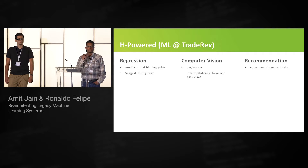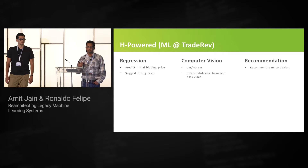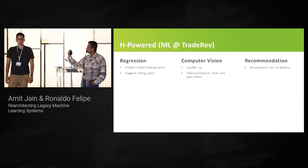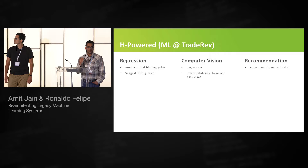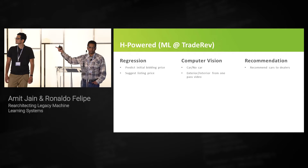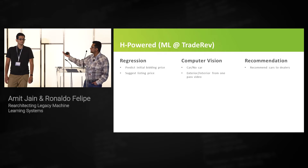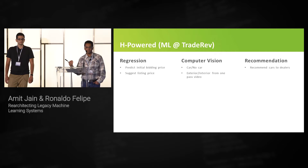For computer vision: since you're buying cars online, you have to figure out first whether it's really a car or someone is selling a bus, a truck, or maybe a horse cart on your platform. That's where we have a car/no-car classifier. We also have a cool system where we take a video of the car and from that we can figure out the passenger side, the back side, the front, and the console of the car. Recommendation is a typical use case where we are recommending cars to dealers. Today's topic is primarily dealing with the regression framework.